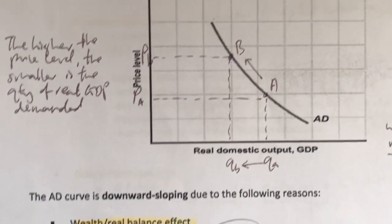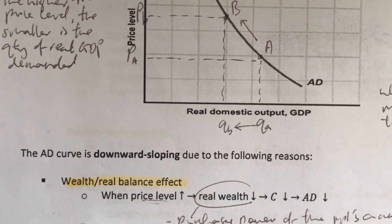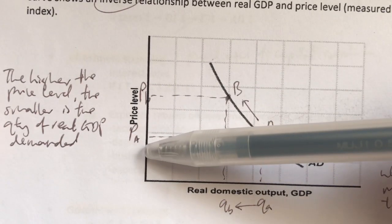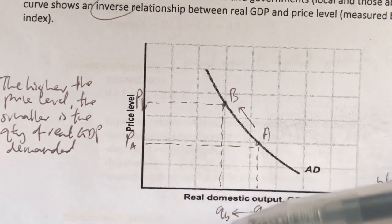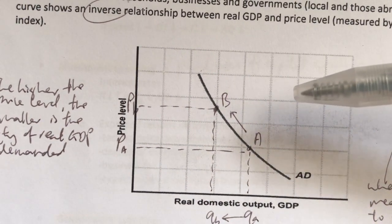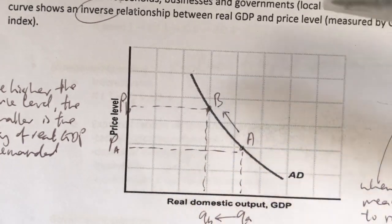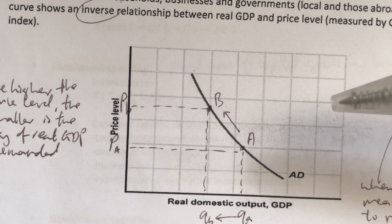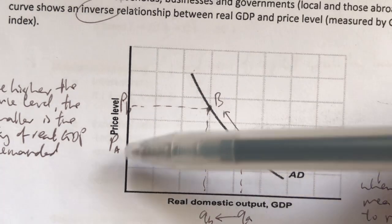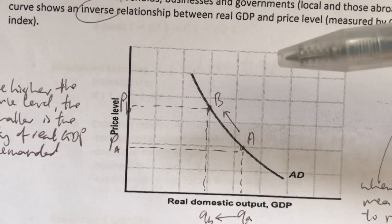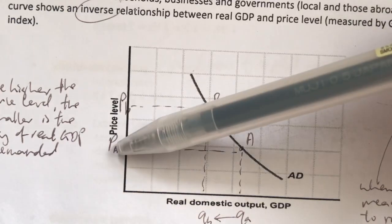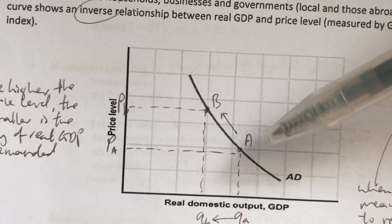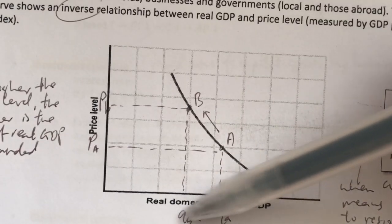There are three reasons why the AD curve is downward sloping. First, it's due to the wealth or real balance effect. When the price level increases, say from PA to PB, in terms of real wealth or purchasing power, it falls. Although the price level increases, there's no change in our incomes — we're still experiencing the same salaries. So we feel that things are more expensive, meaning lesser affordability. That is why when the price level increases, real wealth falls, which is translated as a fall in consumption. A fall in consumption means there's a fall in aggregate demand.